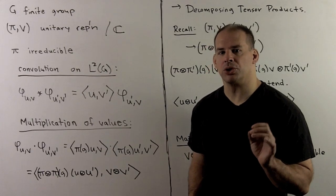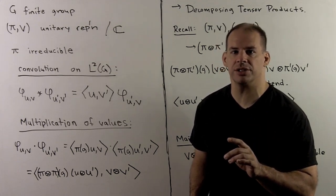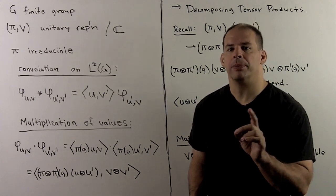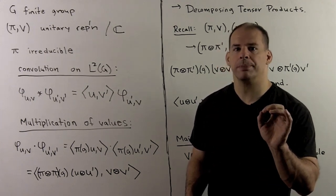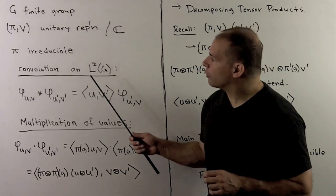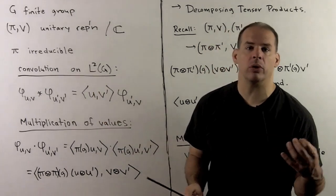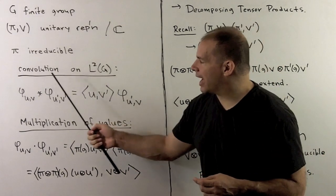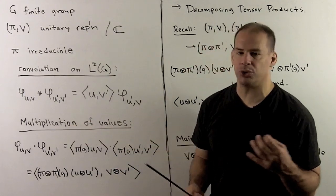Now that we have a theory for decomposing representations into irreducible sub-representations, we consider tensor products. Tensor products might not seem so natural at first, so let's give an example to motivate. Recall, if we had pi, an irreducible unitary representation of our group over the complex numbers, we could define products of matrix coefficients using convolution on L2 of G.